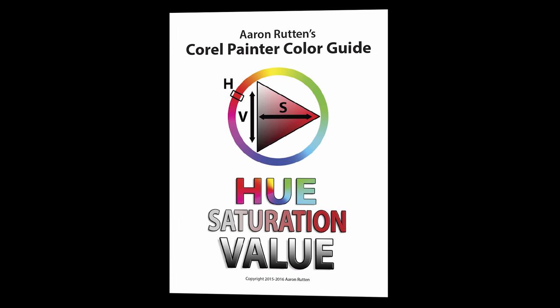So what this PDF is going to show you is how to intelligently pick color in Corel Painter, and to do that you need to be able to understand how color works in Corel Painter. In Corel Painter you have a color triangle with a ring around it, and hue is the outer ring, which represents the pure color—that would be yellow, or red, or blue, or green.